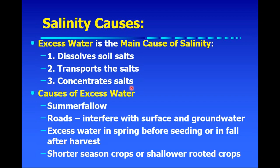The cause of salinity is really excess water — excess water dissolves the salts, transports them to lower relief or lower topographic areas, and then those salts become more concentrated as the water is evaporated or used by crops. What causes this excess water? In the recharge areas it might be summer fallow, or roads interfering with surface drainage and groundwater movement. It could be excess water in the spring before seeding or in early June, or in the fall after the crop is harvested when excess precipitation moves through the root zone down into the groundwater.